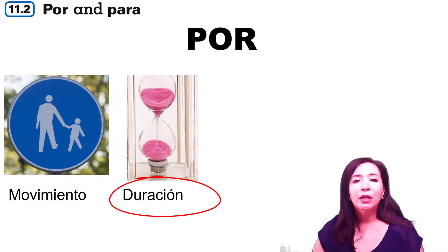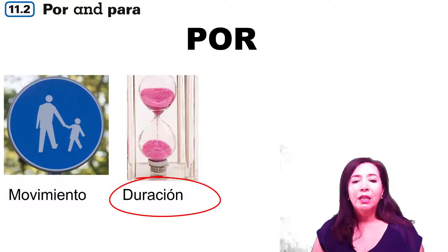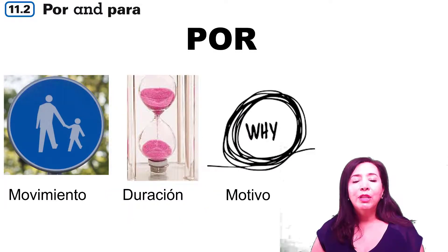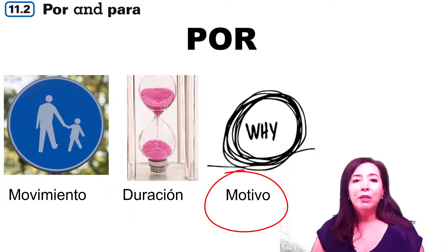Duración — for how long am I doing something? Yo estudio por media hora, o camino por 30 minutos en las mañanas. Motivo — why do you do something? Por qué haces algo?